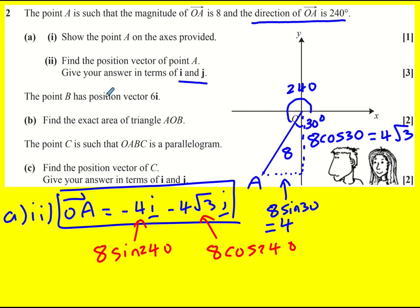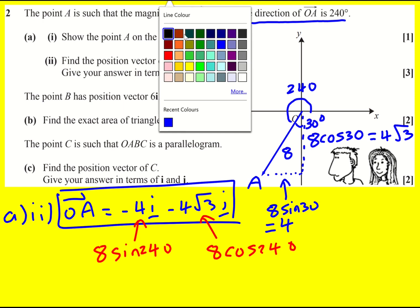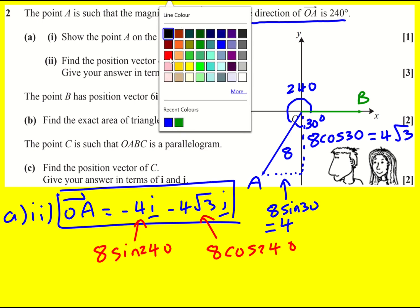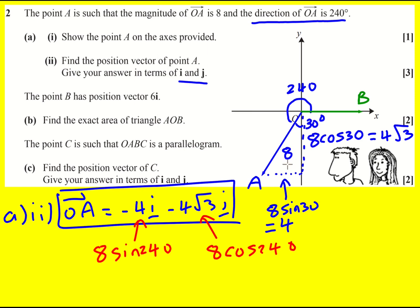We're told that point B has position vector 6i. I'm going to draw that on - it's going along the x-axis like that. We're asked to find the exact area of triangle AOB. I'll just draw this in - there's our triangle.